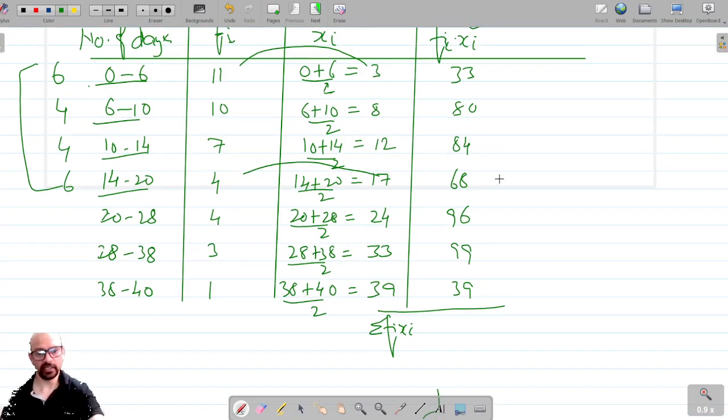Now if I add this, the values are 33, 80, 84, 68, 96, 99, and 39.